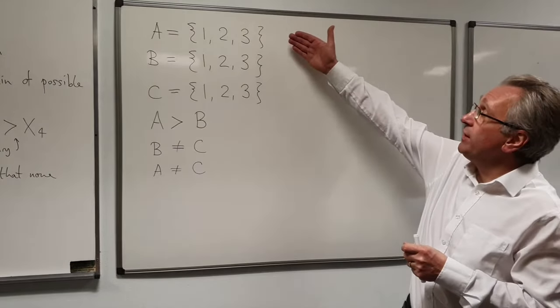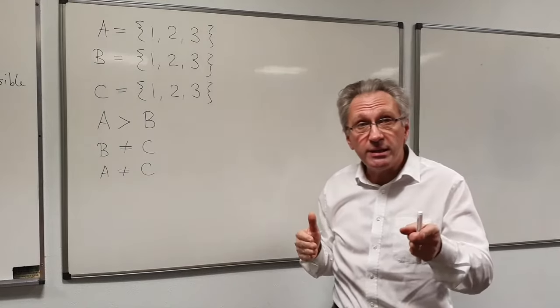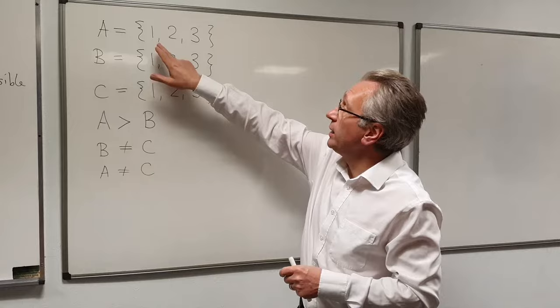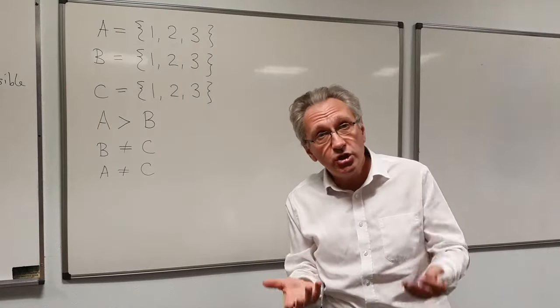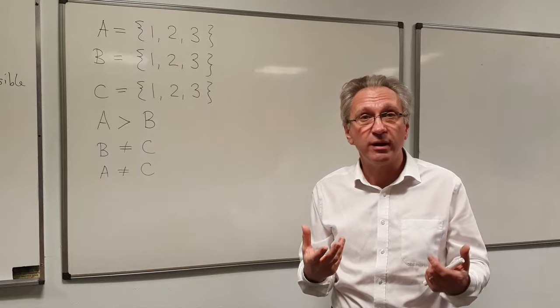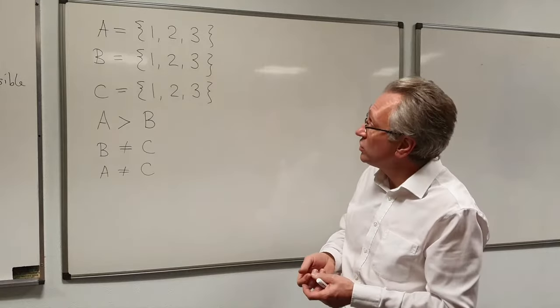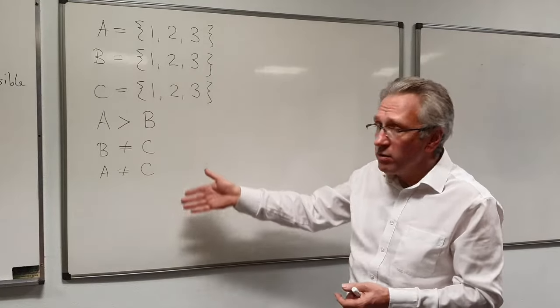So we have three variables: A, B, and C. The domains of these variables are the values 1, 2, and 3. In general, you're allowed to have different domains for different variables. It just happens here that I've got the same domain for each of my variables.